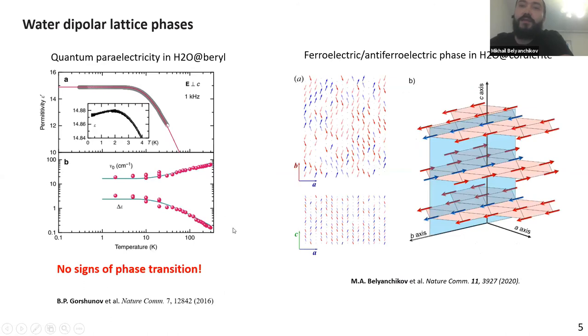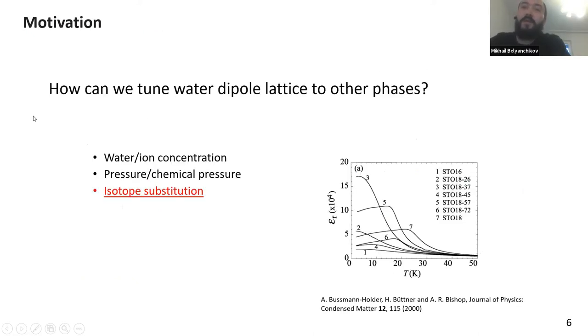Recently, two phenomena were observed in such systems. The first one is quantum paraelectricity of such an ensemble of light water molecules. And in cordierite crystal, which just has slightly lower symmetry, we observed the phase transition to ordered phase with coexistence of ferroelectric and antiferroelectric ordering. And now we can ask ourselves a question, how we can tune this dipole lattice to other phases.